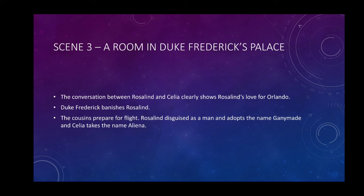Scene 3 is set in a room in Duke Frederick's palace. We see that Rosalind is already talking about Orlando and Celia is teasing her sister. We come to know that Rosalind is deeply in love with Orlando. In this scene, Duke Frederick comes and instructs Rosalind to flee the court as soon as possible. When Rosalind asks the reason, Duke simply states that it is enough that she is her father's child. Rosalind says that she is not guilty — she is loyal and has not planned anything against Duke and his court.